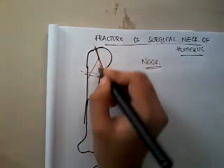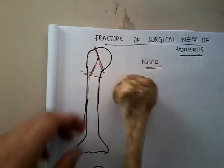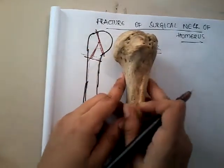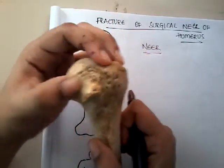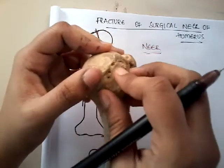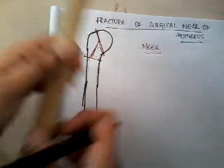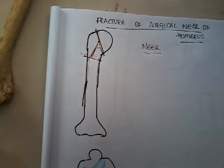The four parts are: number one at the head, number two at the shaft, number three at the greater tuberosity, and number four at the lesser tuberosity. If the fracture is present in all 4 parts, then it is called a 4-part fracture.